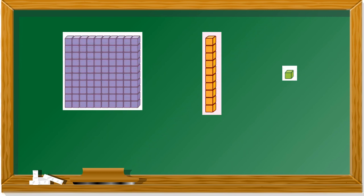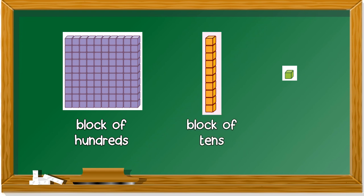Is this familiar to you? You have learned this in Year 1. This one is a block of hundreds, this one is a block of tens, and this last one is a block of ones. The purple block of hundreds has 100 cubes, the tens block has ten, and the ones block has only one.